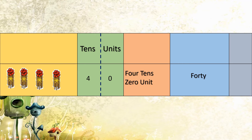We have completed writing of numbers from 31 to 40. We added 1 unit to each earlier number to get the next number, and we got the last number, 40. I hope you understood how to write 31 to 40.